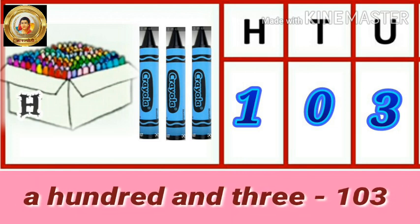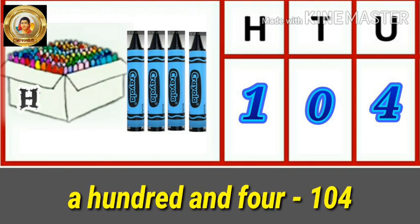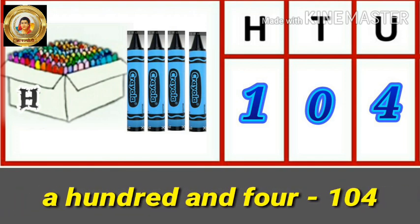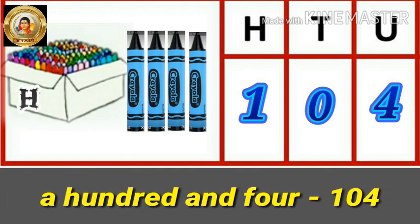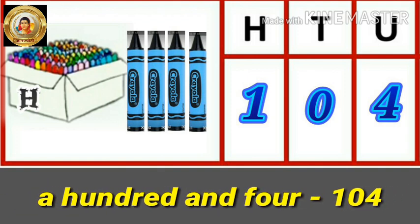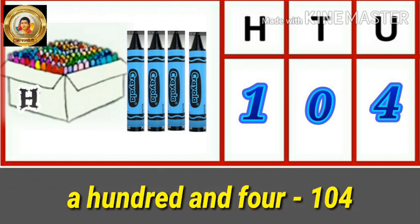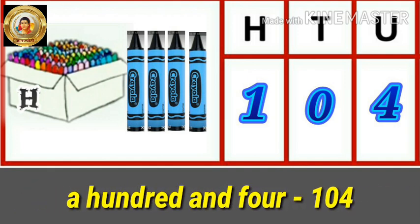That is one zero three. In the next picture, there are four single crayons — four in the unit place. No tens, so zero in the tens place. And one box of hundred crayons, so one in the hundred place. It makes the number a hundred and four — that is one zero four.